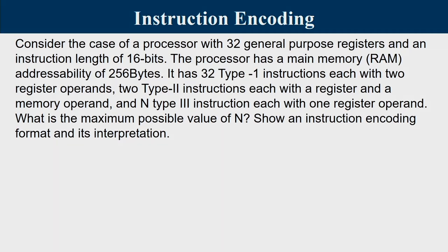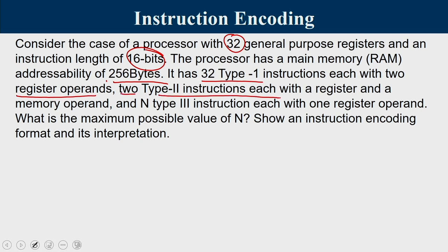Consider the case of a processor with 32 general purpose registers and an instruction length of 16 bits. The processor has a main memory addressability of 256 bytes. It has 32 Type 1 instructions each with 2 register operands, 2 Type 2 instructions each with a register and a memory operand, and n Type 3 instructions each with 1 register operand. What is the maximum possible value for n, and we are supposed to show an instruction encoding format and its interpretation.